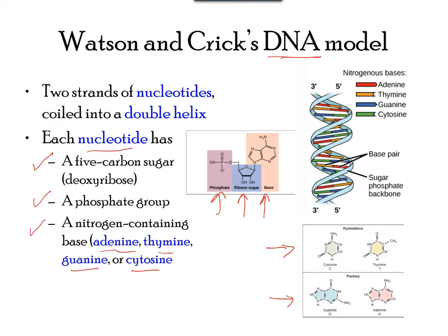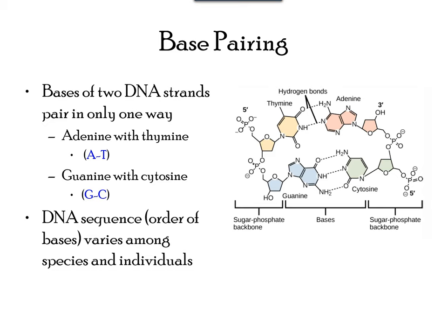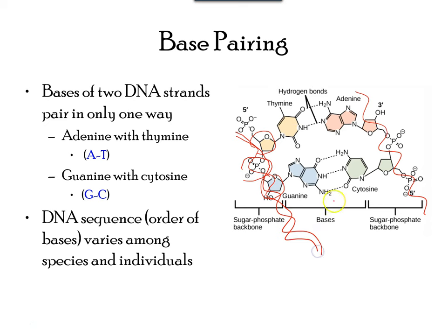The nucleotides are also named for the nitrogenous base they contain — hence, adenine, thymine, guanine, and cytosine nucleotides. The phosphate group of one nucleotide covalently bonds with the sugar molecule of the next nucleotide, forming a long chain of nucleotides. The sugar-phosphate group becomes the backbone for each strand of DNA, and the nucleotide base sticks out from this backbone.